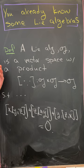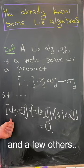So what is the definition? Well, it's a vector space together with this bracket product satisfying the following identity, which is the Jacobi identity.